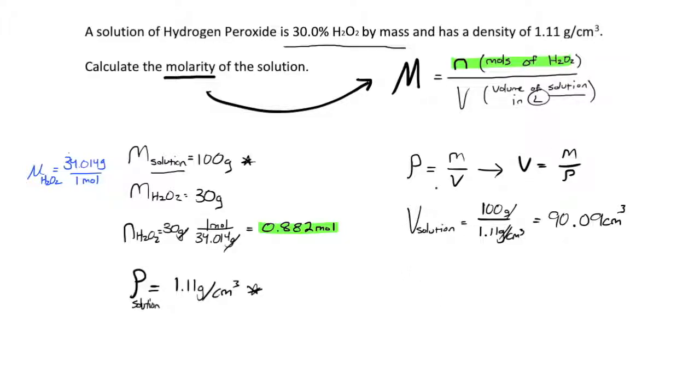So, now we just need to run one more conversion. We need to know that 1 liter is equal to 1,000 centimeter cubed. So, we can take this result, 90.09 centimeter cubed, and multiply it by the conversion factor, which says that there are 1,000 centimeter cubed in 1 liter. This allows us to cancel off the centimeter cubed, and conclude that in liters, our solution has a volume of just about 0.090 to three significant figures.